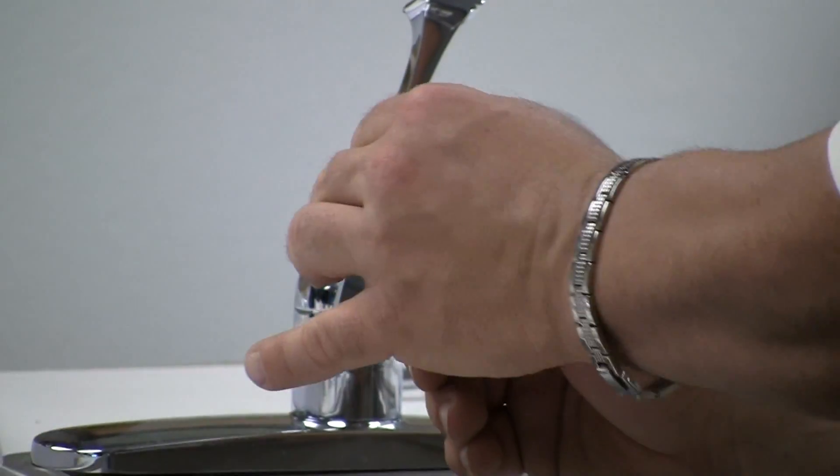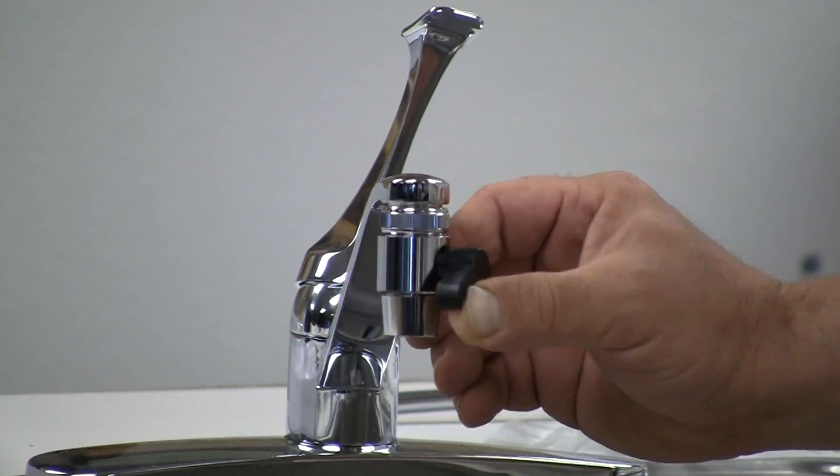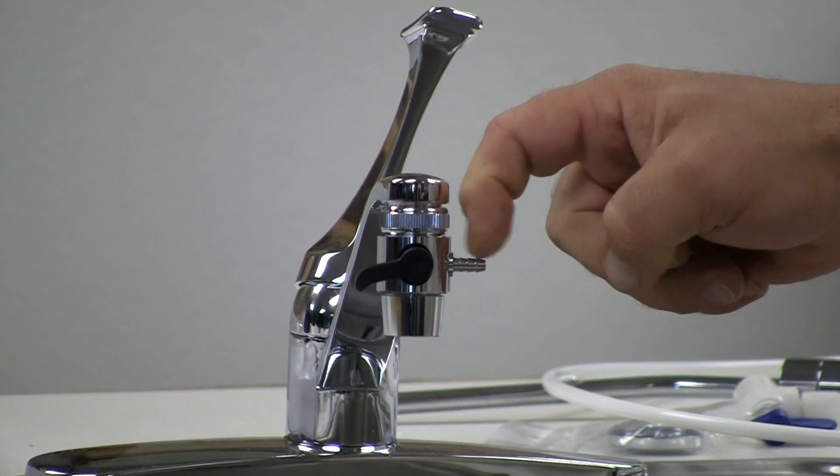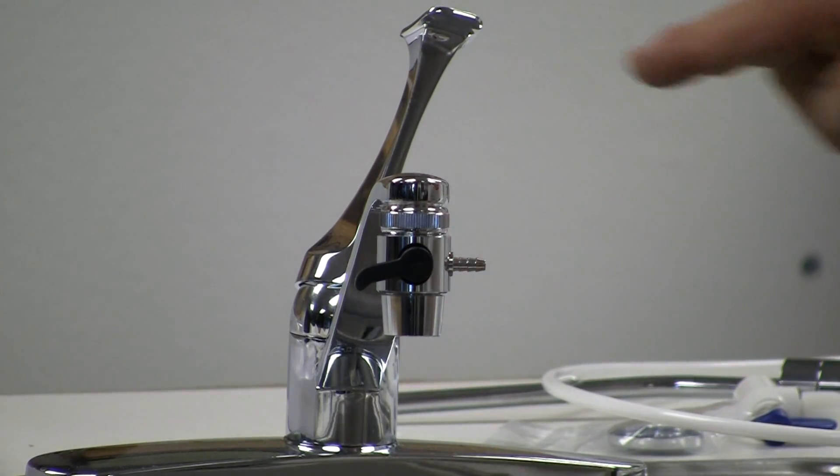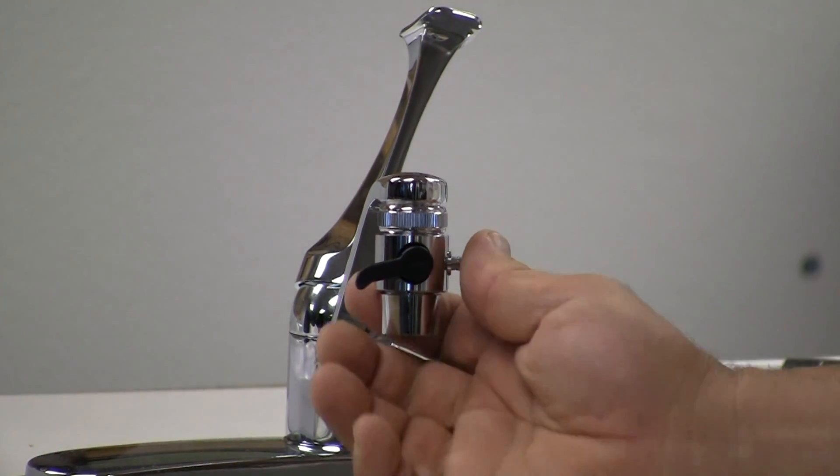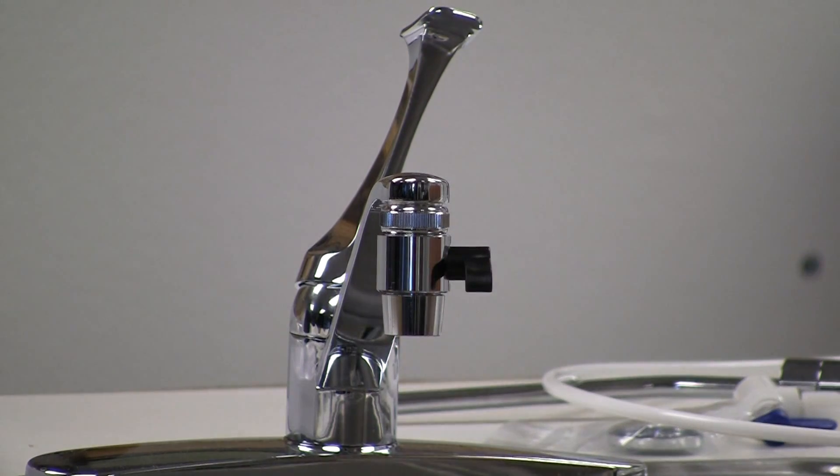Again, no tools needed, hand tight, and you'll notice that you have this barbed fitting. This should be facing straight back on your faucet, and we'll set it that way, straight back.